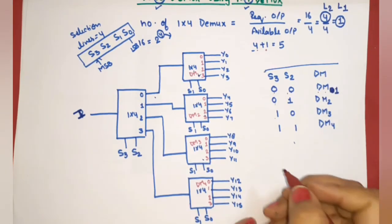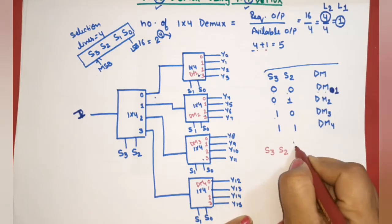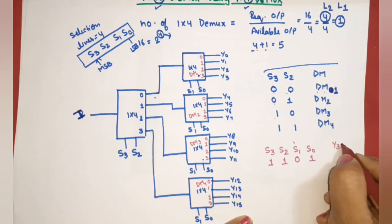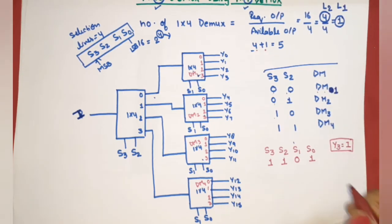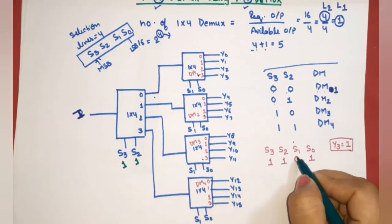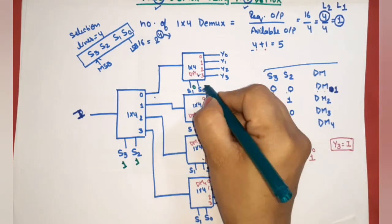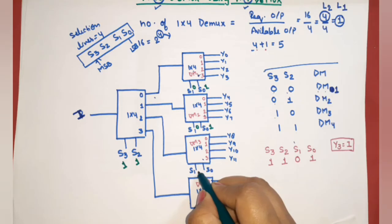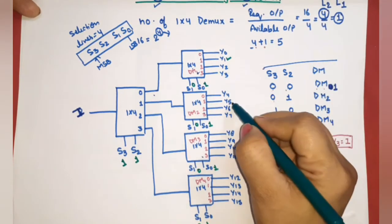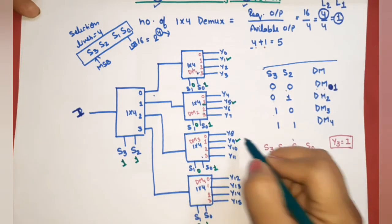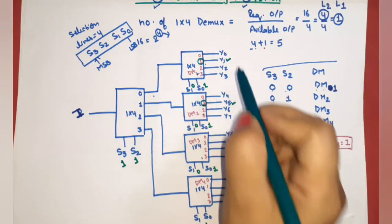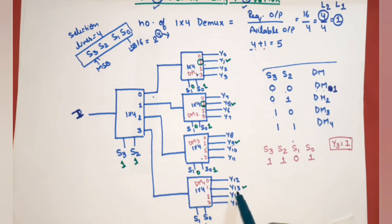Let us cross-verify with the diagram. The values from the truth table were S3,S2,S1,S0 = 1,1,0,1. S3,S2 = 1,1, and S1,S0 = 0,1. S0=1 and S1=0 are applied to all label-2 demultiplexers. With S1,S0 = 0,1, output Y1 of dm1 is selected, Y5 of dm2, Y9 of dm3, and Y13 of dm4. Now for S3,S2 = 1,1, according to the table the 4th demultiplexer (dm4) is selected. The remaining dm1, dm2, dm3 will be off as they receive no input, so their outputs are zero. Input I is available only at dm4, and dm4's selected output is Y13. So I is available at Y13 — verified.